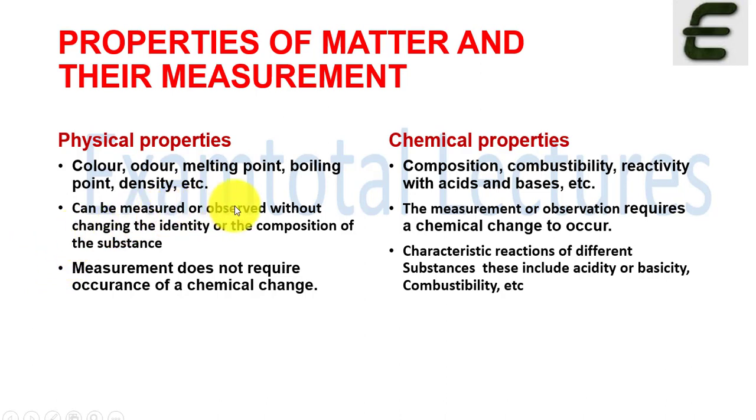Physical properties can be measured or observed without changing the identity or composition of a substance. When you check the physical properties like color, after checking the color, the result you get - after that, whatever matter you were checking remains as it is. There will be no change in it. The identity or composition of the substance you are checking does not change.